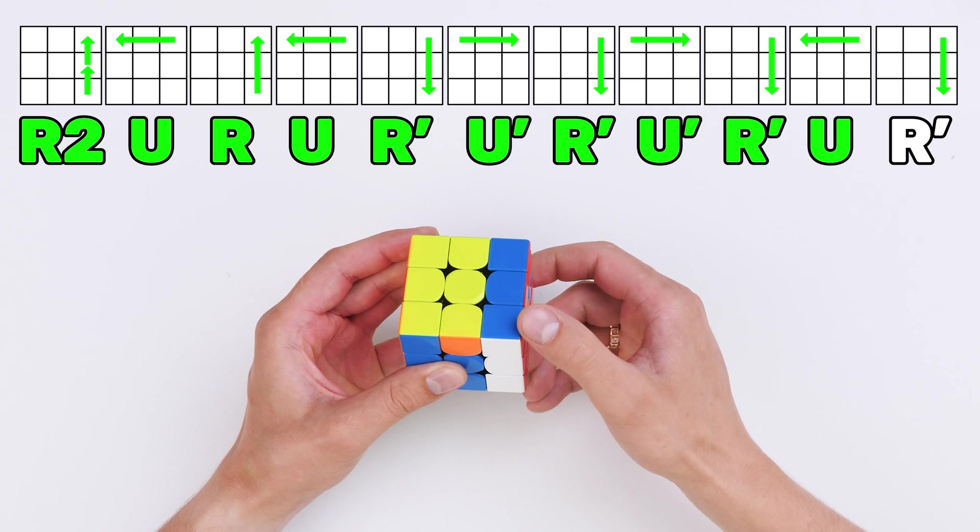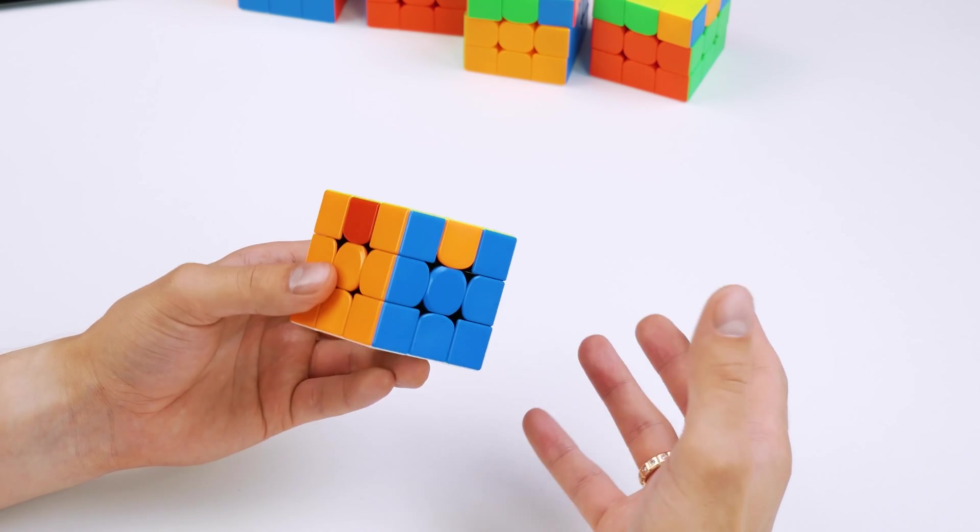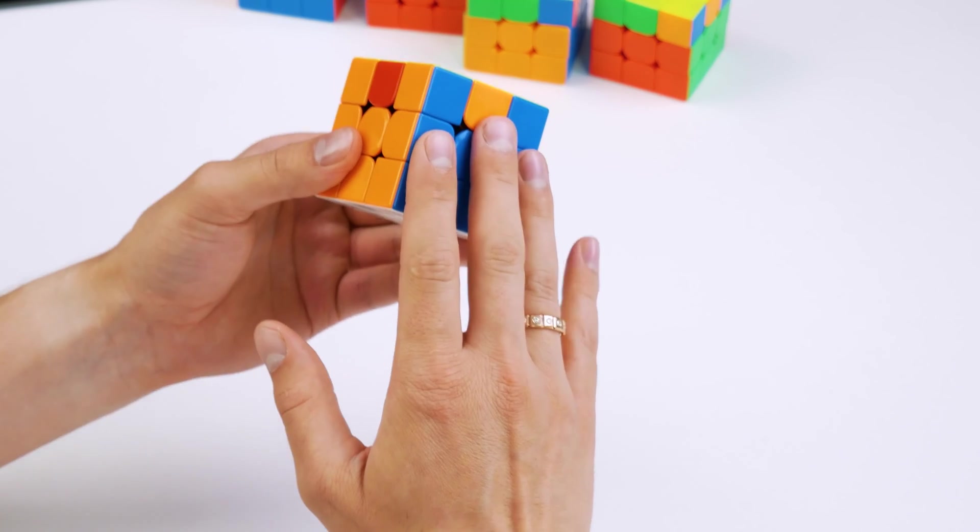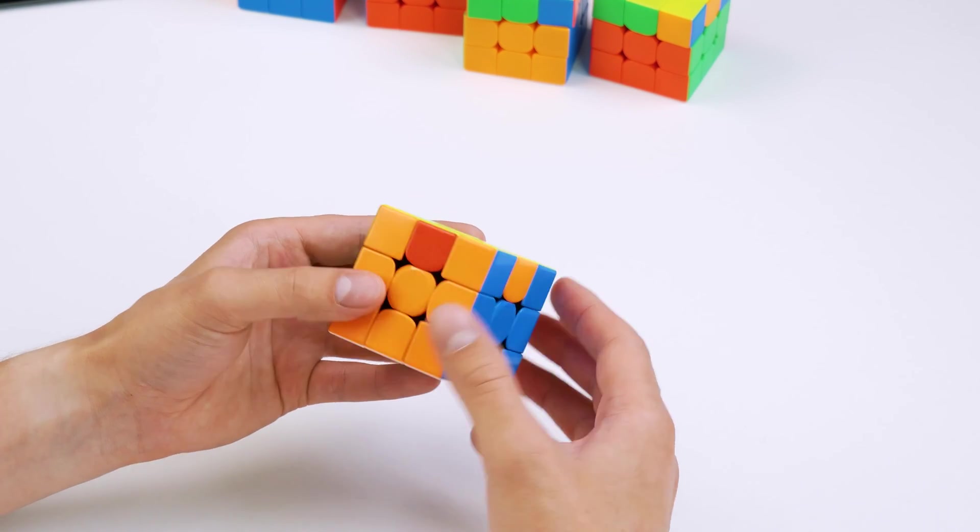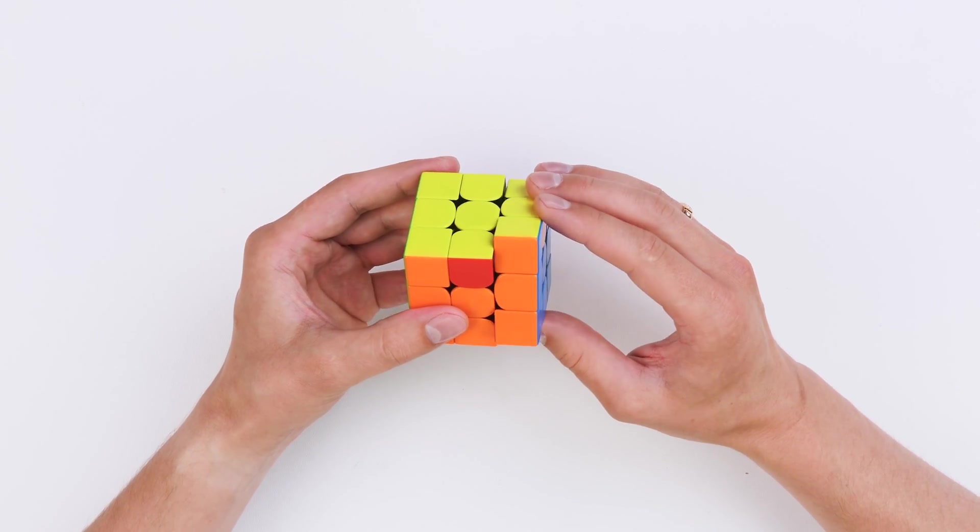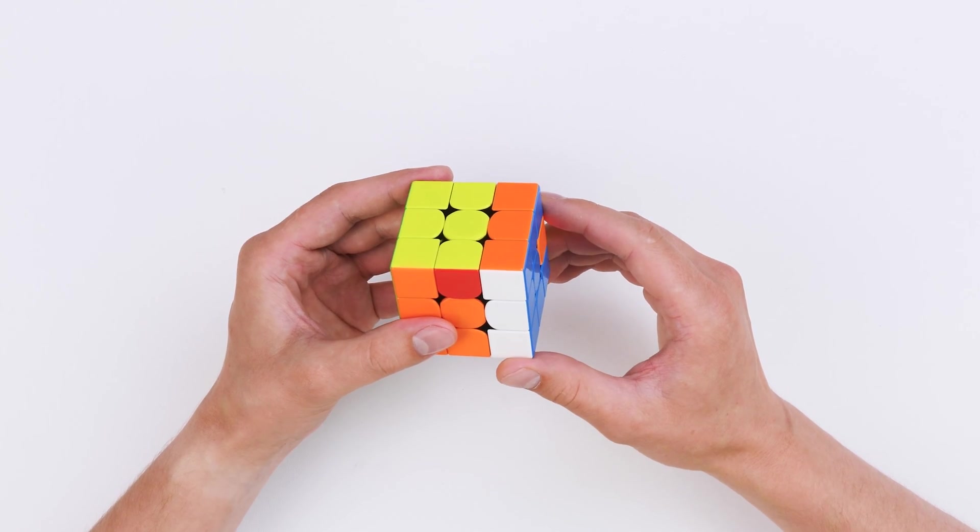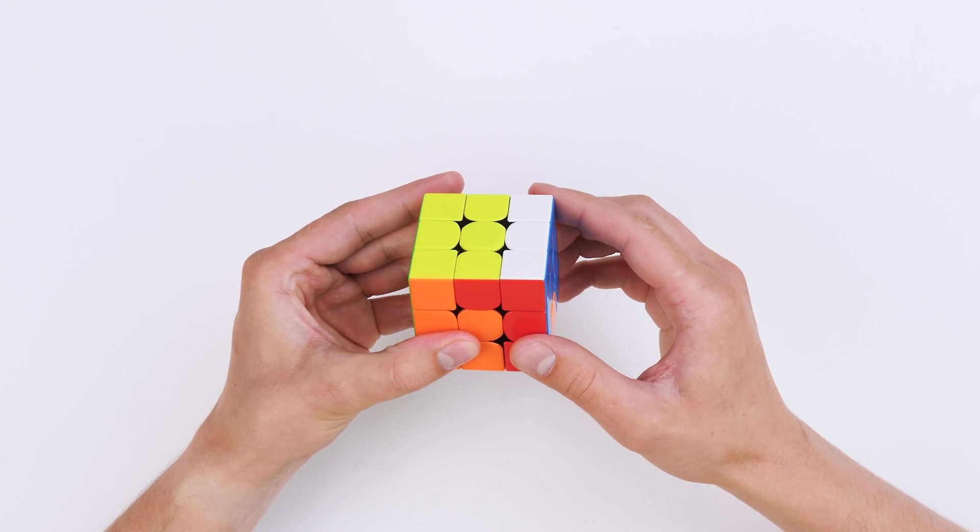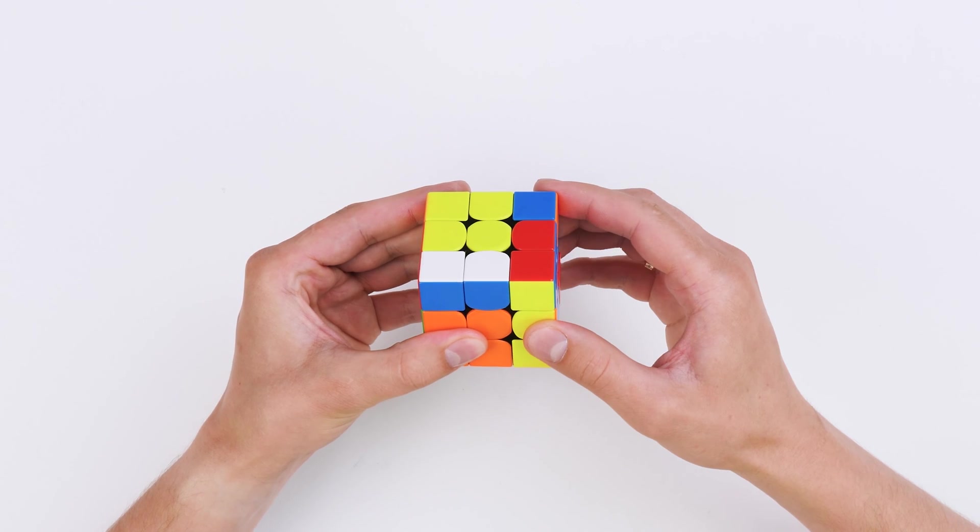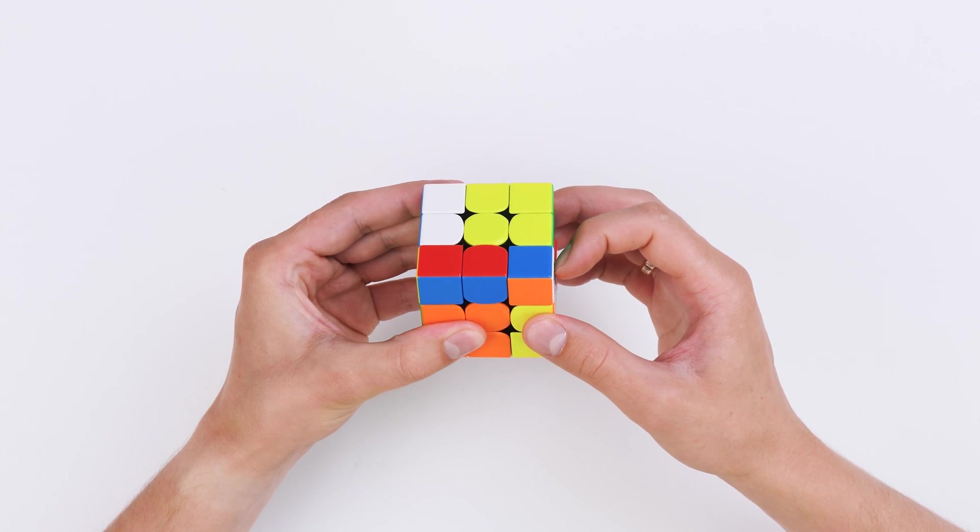Now, let me explain how I memorized this algorithm when I first studied it, to make it easier for you. Repeat after me. First, we just turn the right side. And then repeat. Upper right, upper right. And turn back.